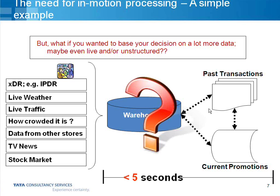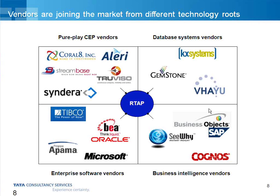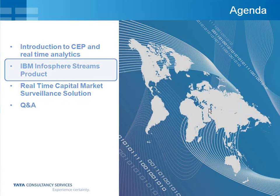Lots of vendors are joining the stream processing market, from pure-play CEP vendors, to database systems, to enterprise software vendors, to business intelligence vendors. What we have chosen is the IBM InfoSphere Streams product, which is IBM's commercial product providing an execution platform and services for user-developed applications. It ingests, filters, analyzes, and correlates potentially massive volumes of continuous data streams.